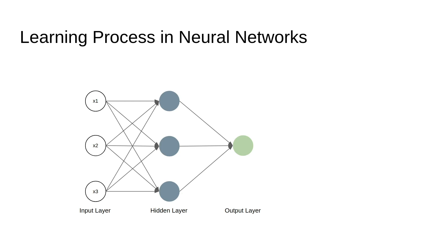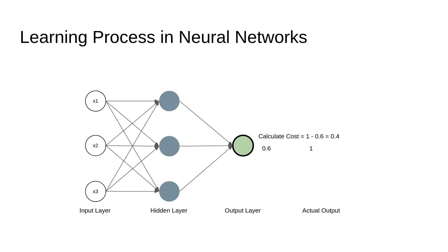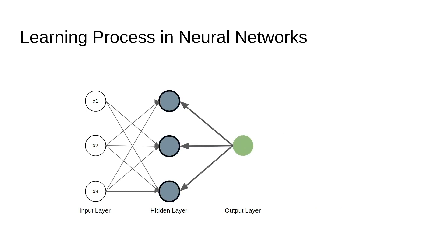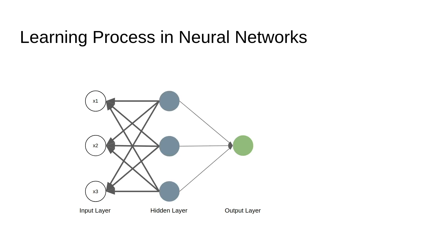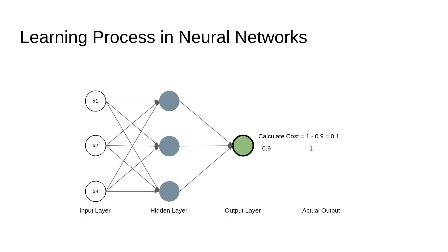Let's quickly see what happens in a neural network and how it learns. We have inputs, hidden layers, and output layers. The input is propagated through all the hidden layers to reach the output layer. At the output layer, we compare the network's output with the actual output and calculate how different it is — we call this the cost. We propagate this cost back into our network so that all the parameters are tuned to produce an output closer to the actual output. This process repeats until the cost is very small, and this is when we can say our neural network has learned something.